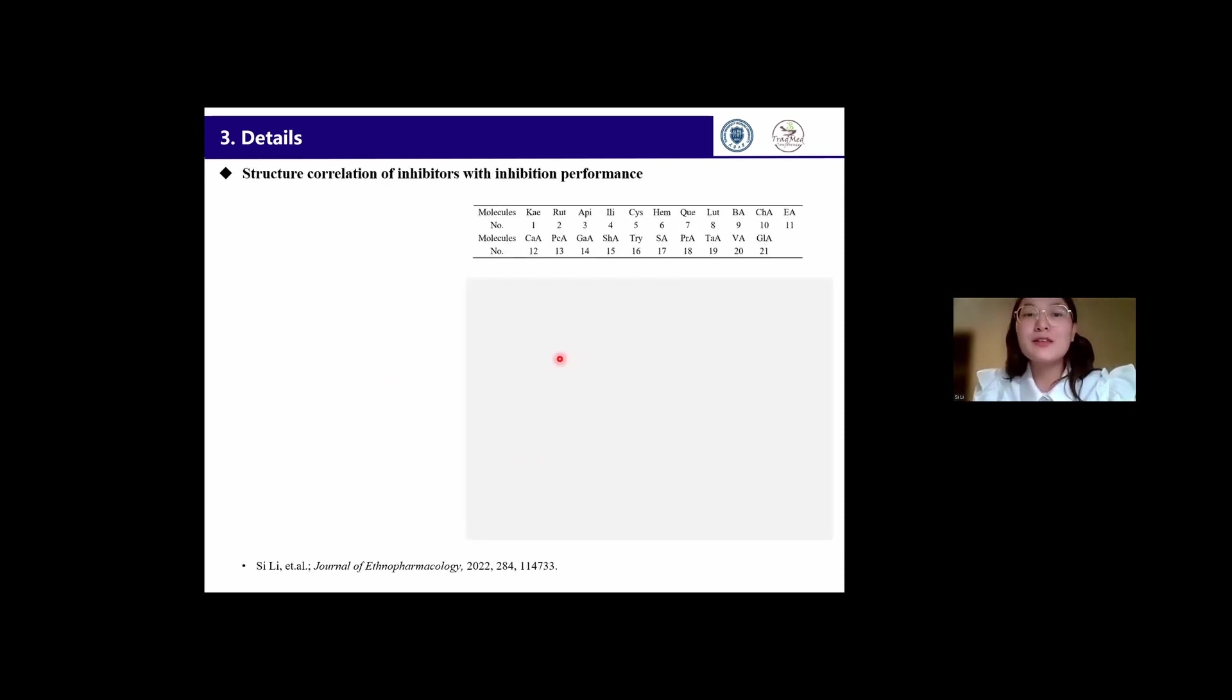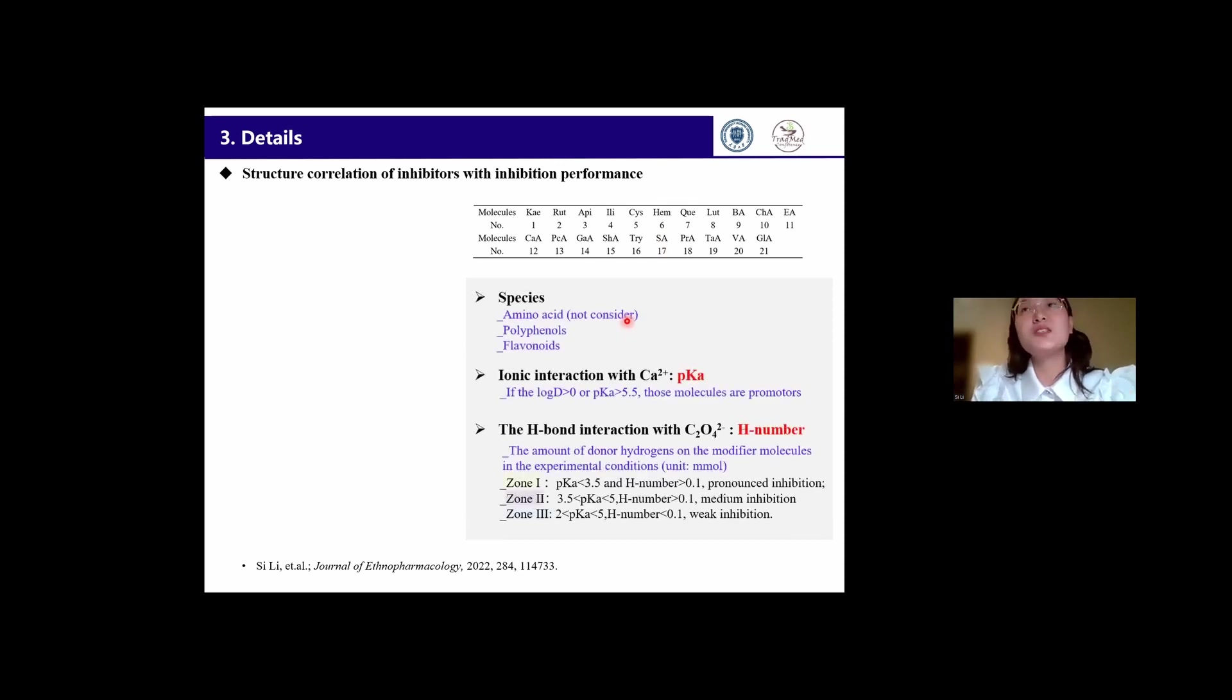Finally, in order to inspire further screening of calcium oxalate inhibitors, we explored the structure-performance relationship between these 21 inhibitors or promoters, based on the quantification of their inhibition performance. From the analysis of binding specificity, we found the modifiers' pKa and its H-number, H-number means the amount of donor hydrogen in inhibitor's molecular structures. These two parameters can classify or distinguish the modifiers into different zones.